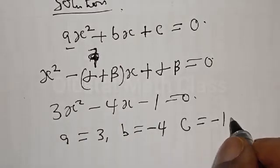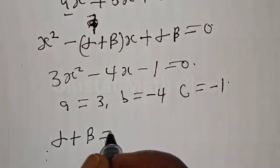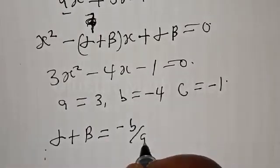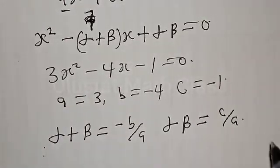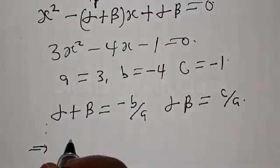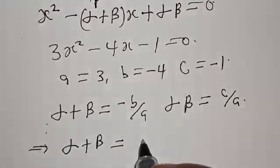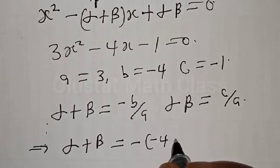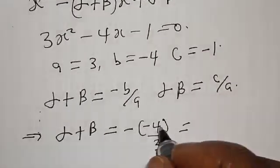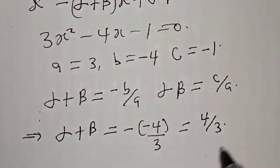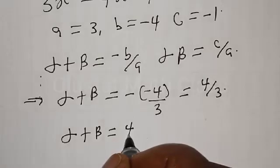Therefore, alpha plus beta is given by minus b over a. Our b is -4, so we have minus(-4) over 3, which equals positive 4 over 3. Therefore alpha plus beta is equal to 4 over 3.